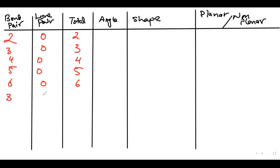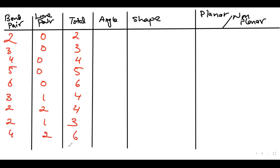Then: 3 bond pairs and 1 lone pair gives total 4. Then 2 bond pairs and 2 lone pairs gives total 4. Then 2 bond pairs and 1 lone pair gives total 3. Then 4 bond pairs and 2 lone pairs gives total 6.